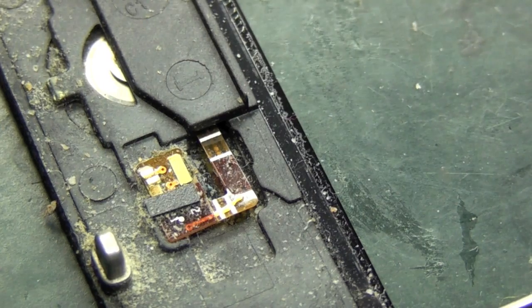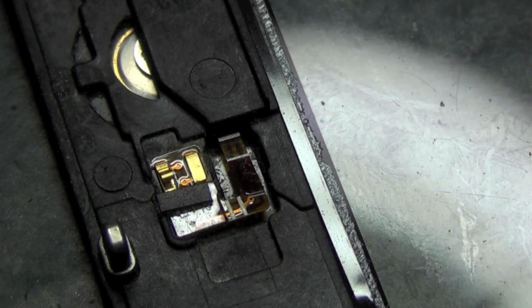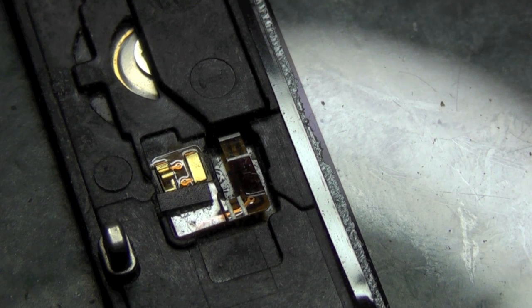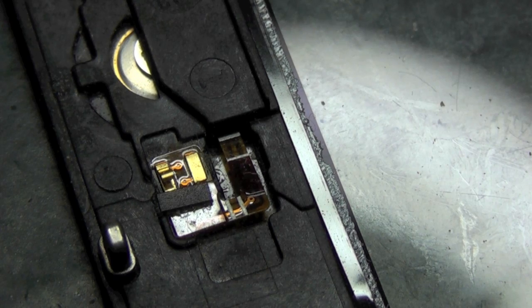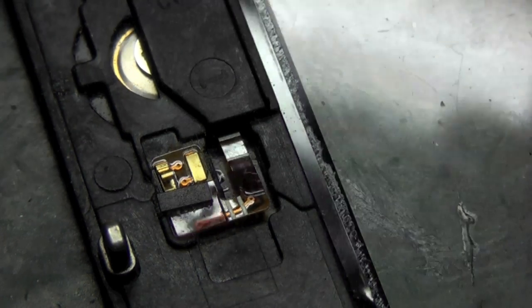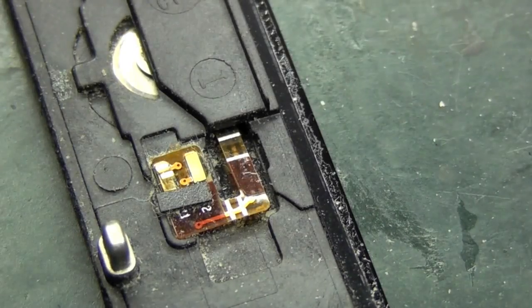So this is what we're going to do. We're going to use a soldering iron at roughly around 350 degrees C, and we're just going to push the residue of this connector off the home button on the back.